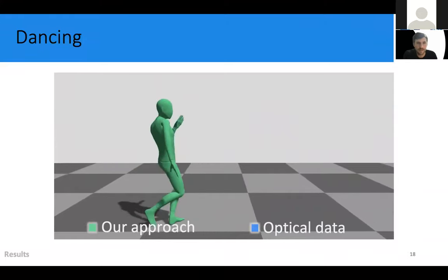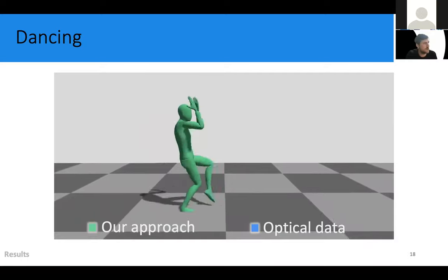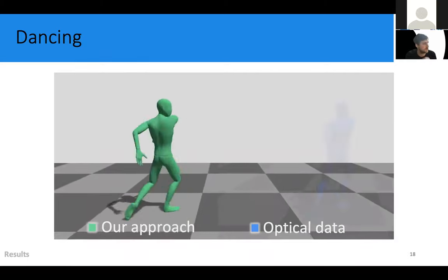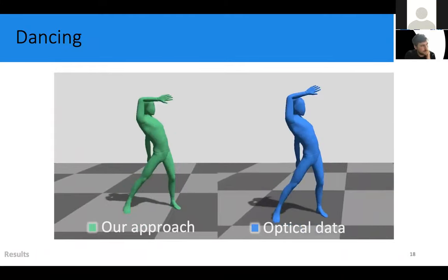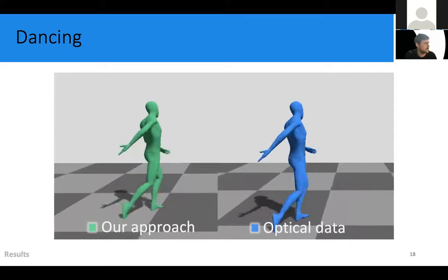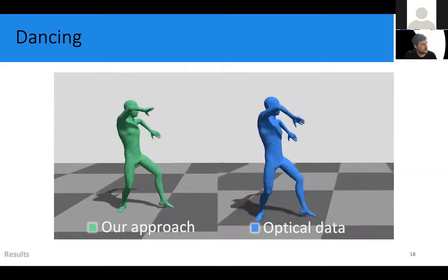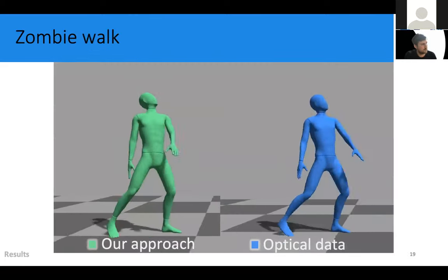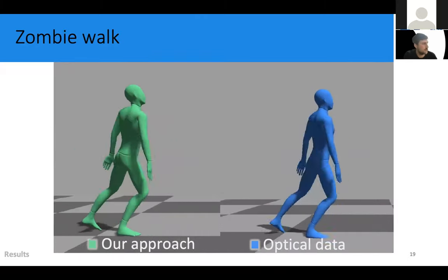And this dancing example shows that our networks are capable of tracking motions with more complex, non-cyclical foot contacts. This unusual zombie walk is no problem either.